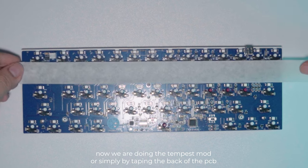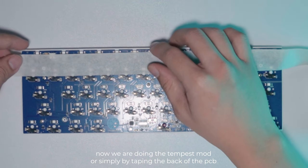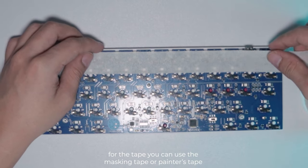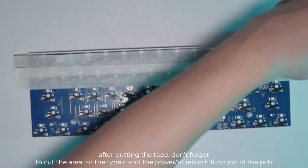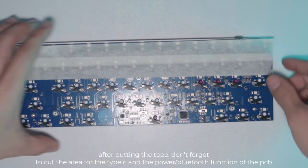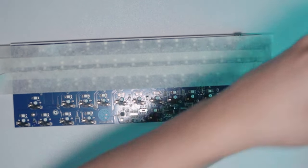For the second mod, we are going to put tape under the PCB. This is what they call Tempest mod. The purpose of this is to make your board sound poppier. For the tape, I would suggest two tapes: masking tape or painter's tape. But if you have a chance to get the painter's tape, I would highly recommend it as it will not leave any marks.